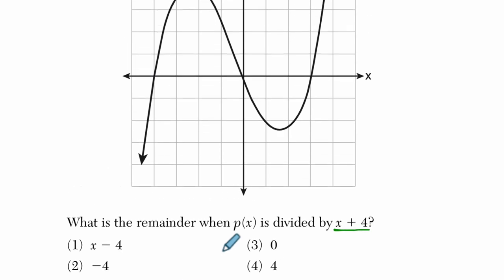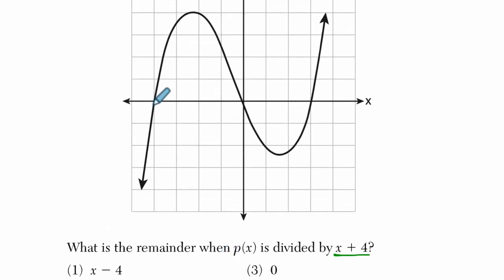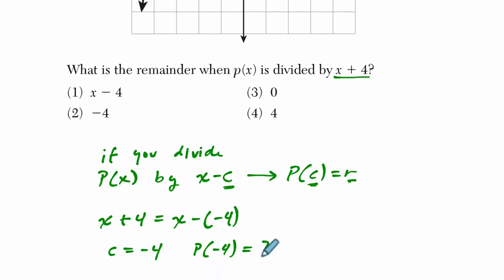Well, if I look at my graph, if I'm plugging in negative 4, here's negative 4, I can see that the output is 0. If you plug in negative 4, the output is 0. So we don't have to guess. The output is 0, and the remainder is, therefore, 0.